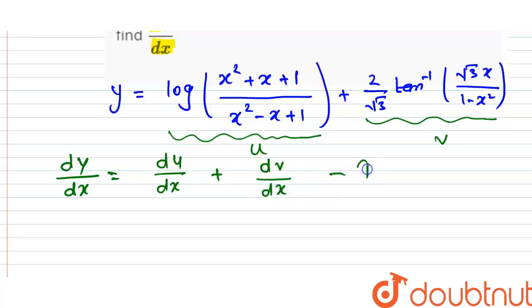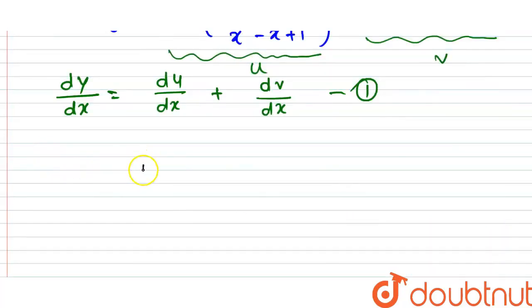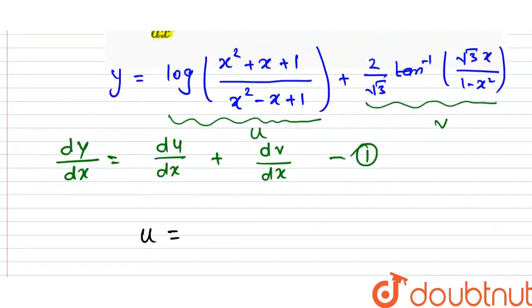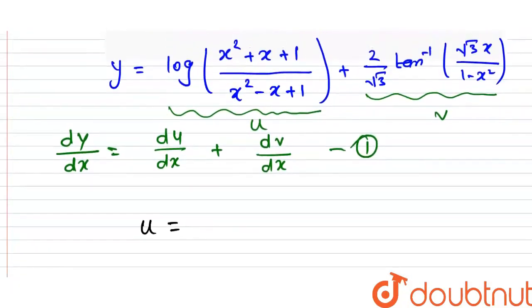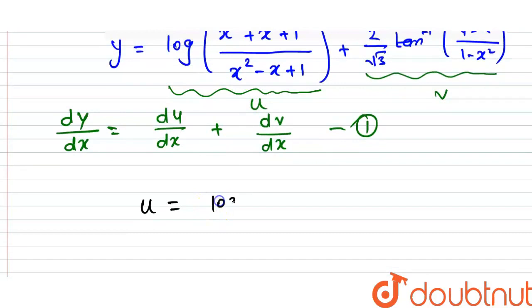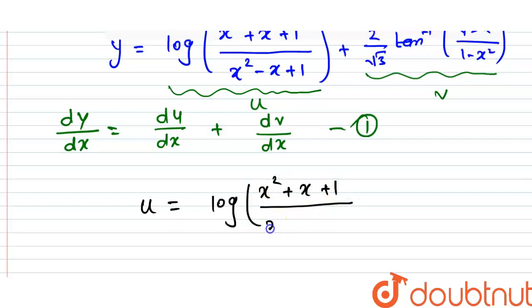Suppose this is our equation number 1. Separately, we can find du/dx and dv/dx and then add to find dy/dx. So, what is u in the question? u equals log of (x² + x + 1) divided by (x² - x + 1).